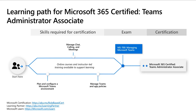The learning path from Microsoft 365 Certified Teams Administrator Associate requires the MS700 exam. Passing the exam will earn you the Microsoft 365 Certified Teams Administrator Associate Certification. Check out the links at the bottom of this slide — this will give you more information on the Microsoft Certification, Learning Partners, as well as resources on Microsoft Learn that will help you get ready for this exam.